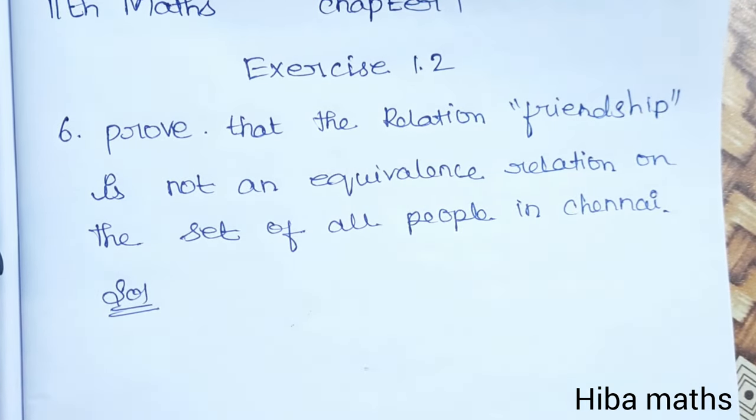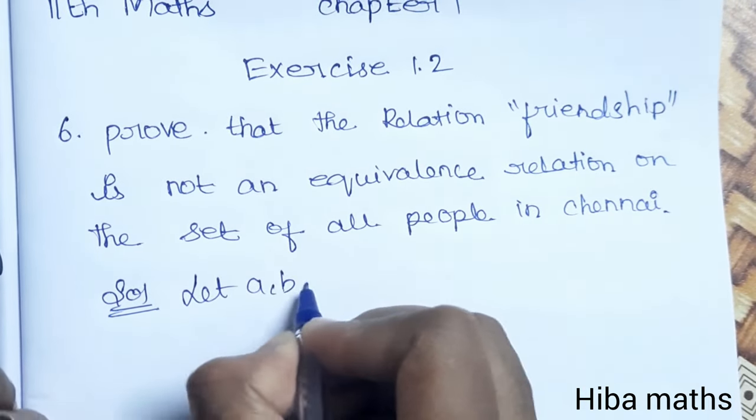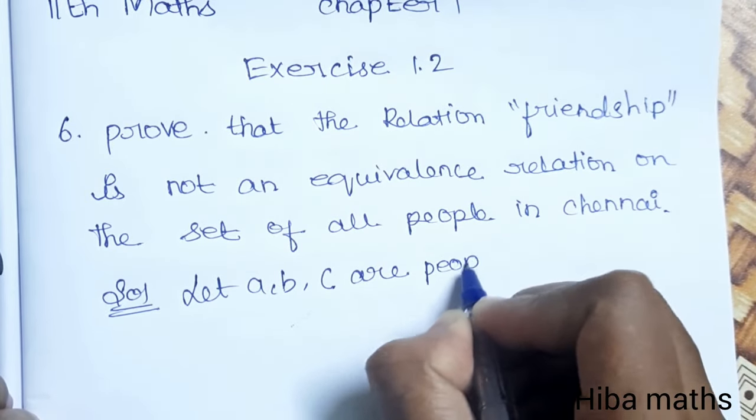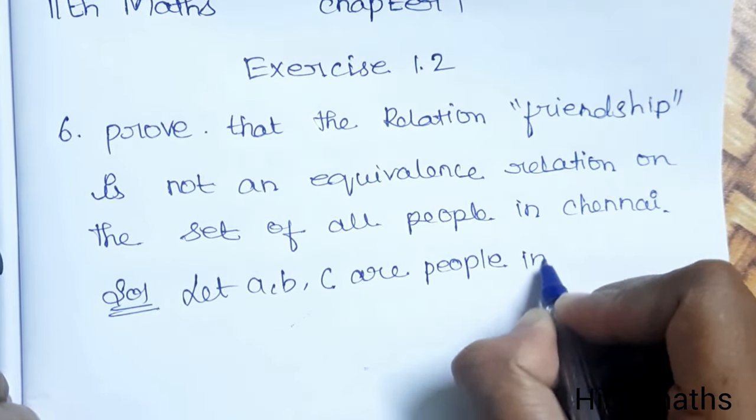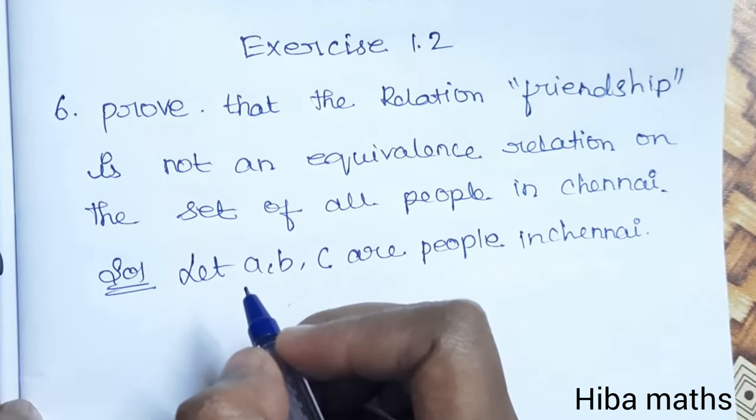Solution: Let a, b, c are people in Chennai.